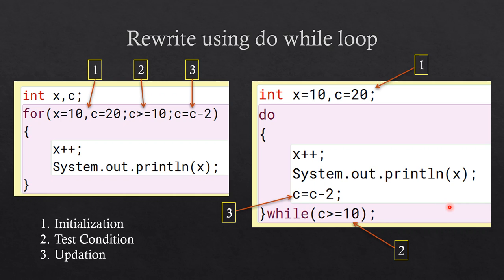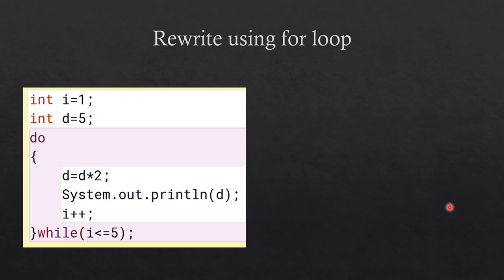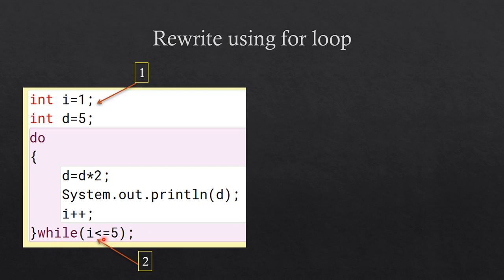Now you are going to see how to rewrite using a for loop. Here a do-while loop is given and you are going to convert it to a for loop. You have to identify the three things: the initialization statement, which is given above the loop — you can see two variables i equal to 1 and d equal to 5. Then the test condition: while i less than or equal to 5.